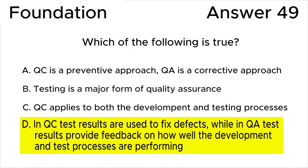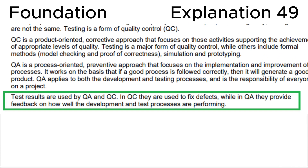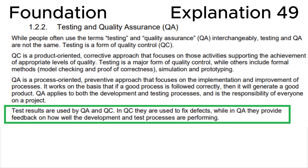My recommendation: please attentively read the ISTQB syllabus to distinguish between QC (quality control) and QA (quality assurance). Looking at section 1.2.2, Testing and Quality Assurance QA, in the ISTQB syllabus, we can see that test results are used by QA and QC. In QC they are used to fix defects, while in QA they provide feedback on how well the development and test processes are performing. This is fully consistent with the correct answer D.